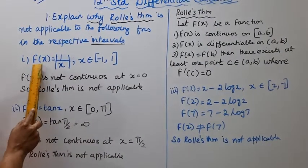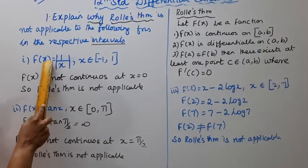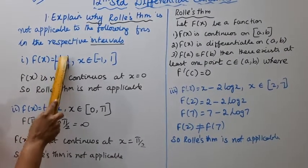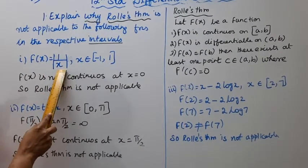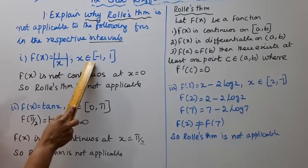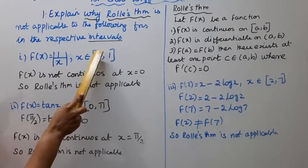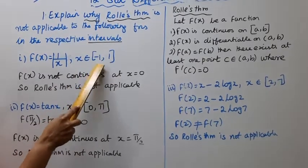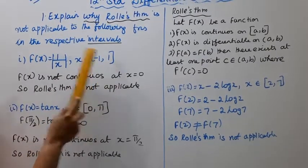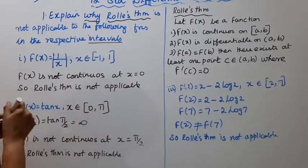First subdivision: f(x) = |1/x|, x belongs to closed interval [-1, 1].